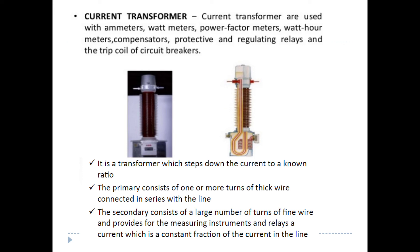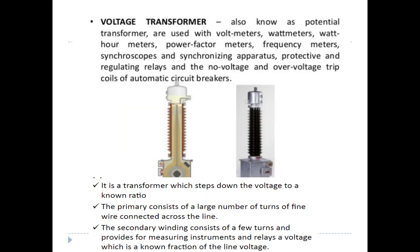The current transformer steps down the current in a non-rational ratio while keeping the voltage correct. The primary consists of one or more turns of thick wire connected in series in the line. The secondary has a large number of turns of fine wire and mainly provides for the measuring instruments. The current is a constant fraction of the line current. The potential transformer steps down the voltage. Its primary consists of a large number of turns of fine wire connected across the line, and the secondary winding has a few turns, providing for measuring instruments and relays. Voltage is a known fraction of the line voltage.